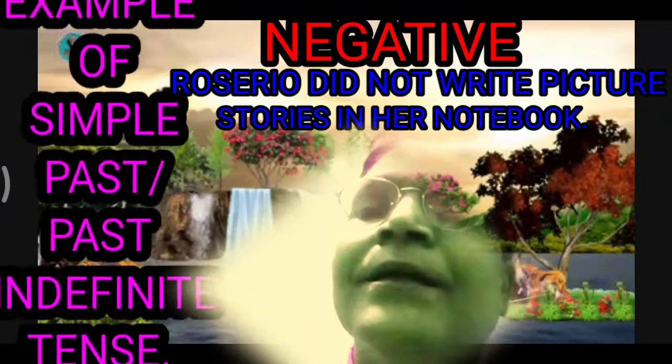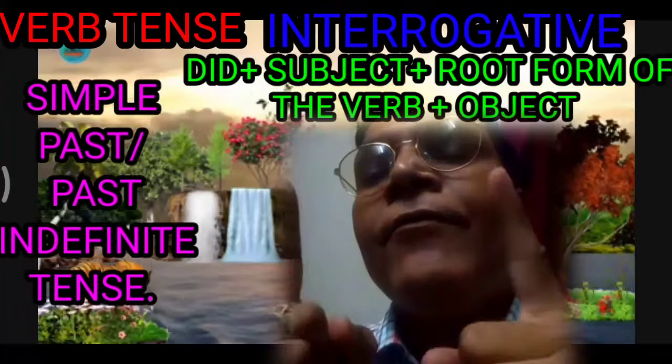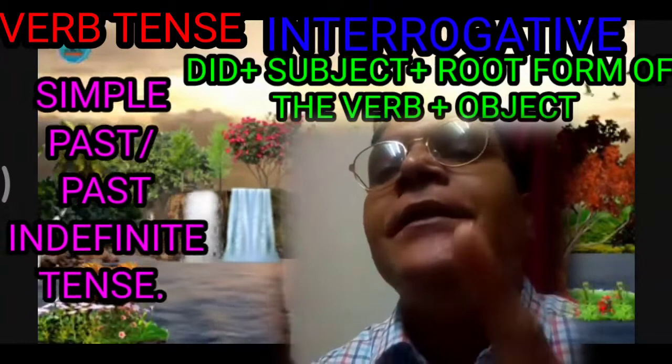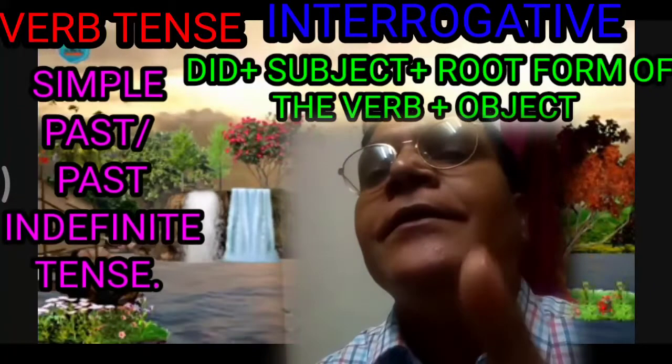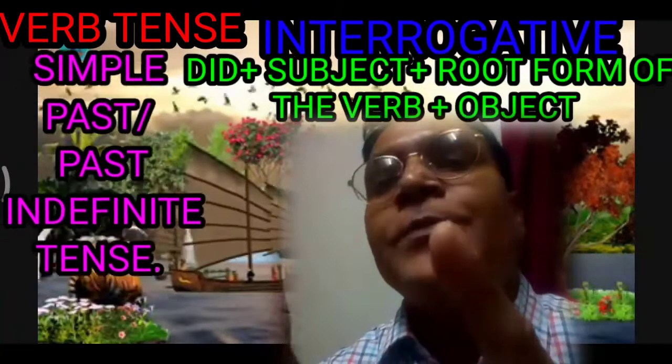Let us consider the interrogative case of simple past or past indefinite tense. Its root formula is: did plus subject plus root form of the verb, or first form of the verb, plus object. Now, the affirmative case of past continuous tense — its root formula is: subject plus was or were plus ing form of the verb plus object.